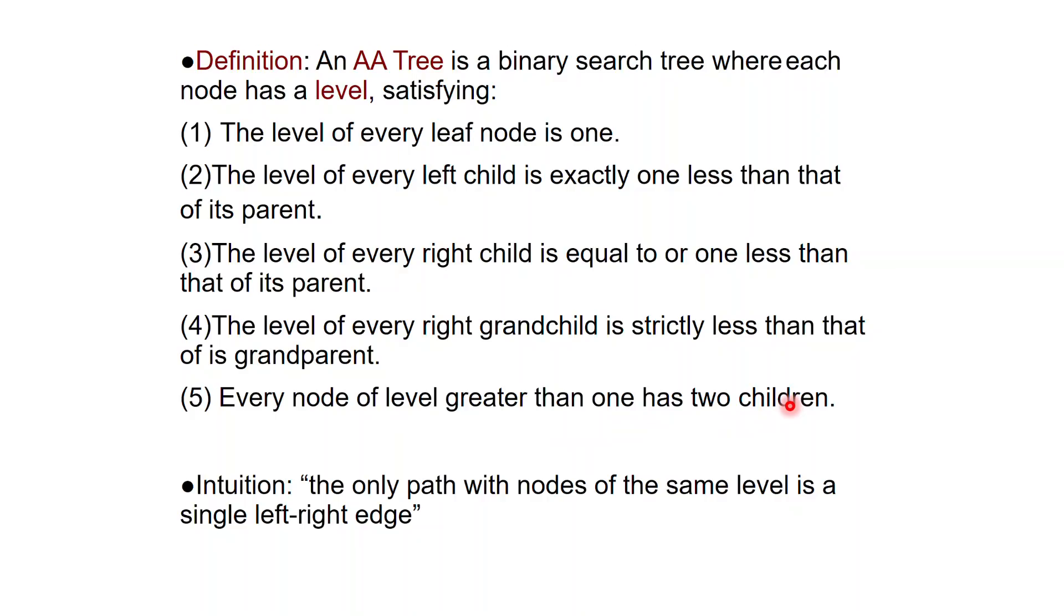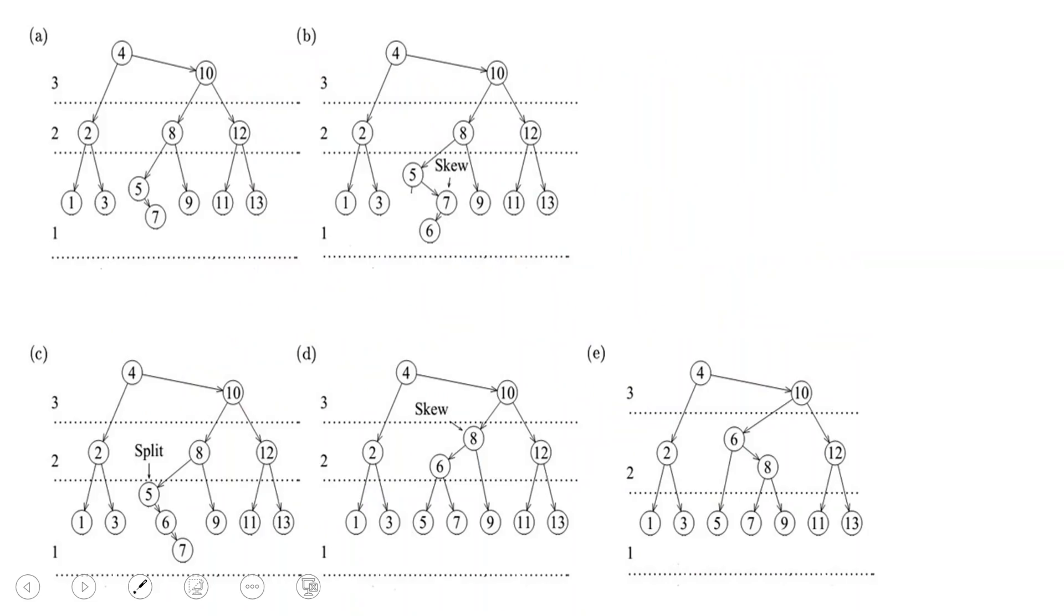So this is what an AA tree is and here is how it looks in pictures. These nodes may not have children or may only have one child. Every other node at every level has to have 2 children. The edges in the same level are at most a single left right edge. Nothing else, everything else has to cross levels.